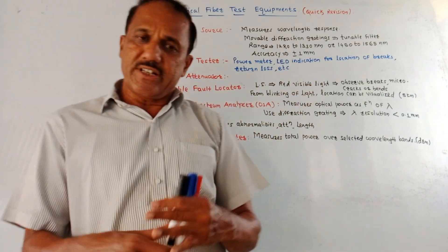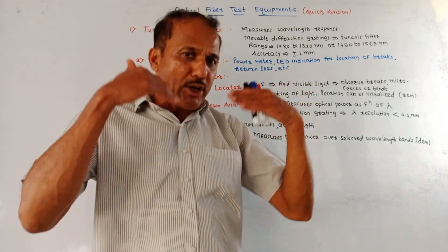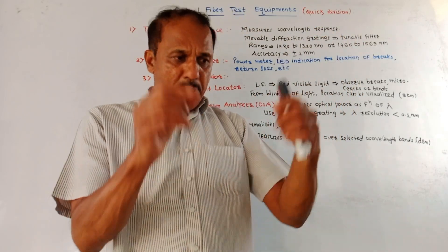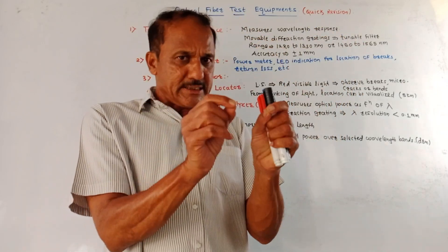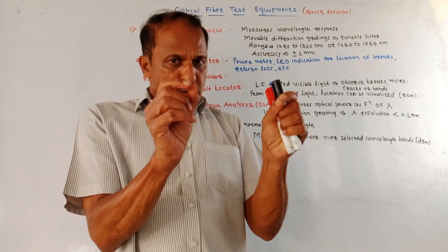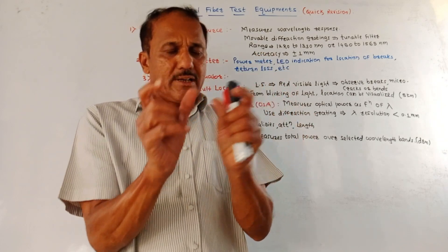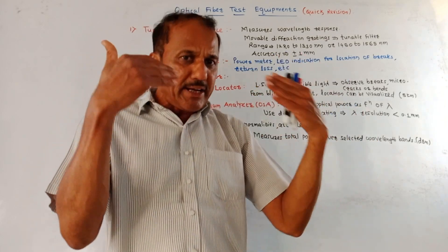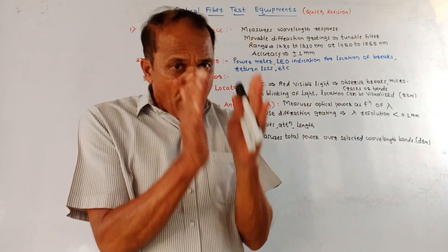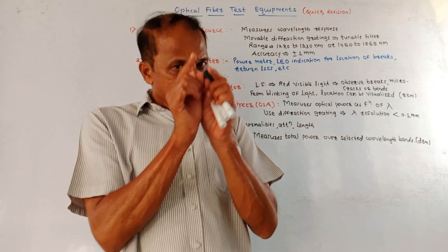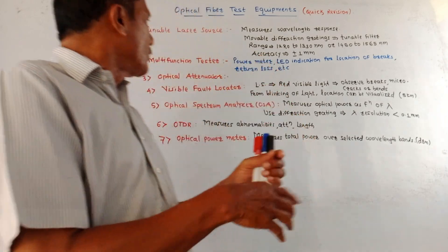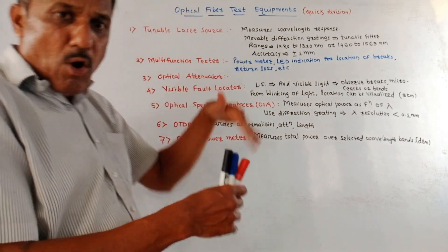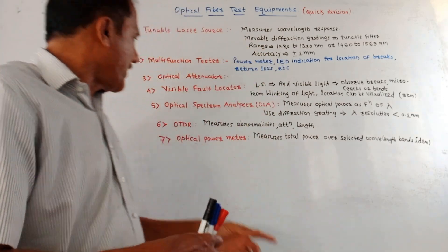Next is optical attenuator. It is used to attenuate, that is reduce down, the strength of optical signal. Many receivers need a limited or fixed amount of incoming optical power. If excess power is applied, it may damage the receiving device. So to avoid this, in many applications it is required to use the optical attenuator, which measures the amount by which the signal is attenuated.